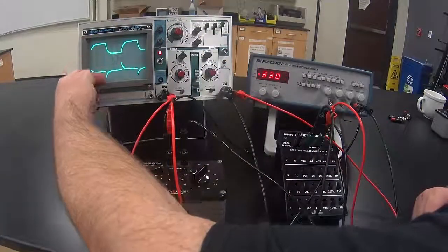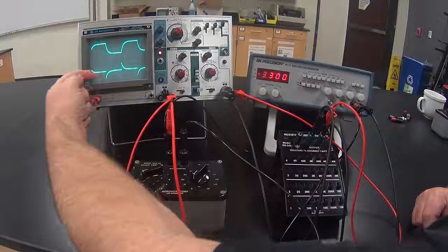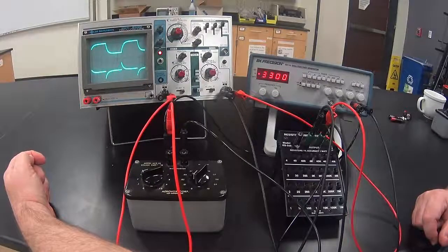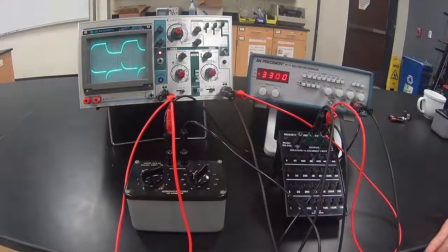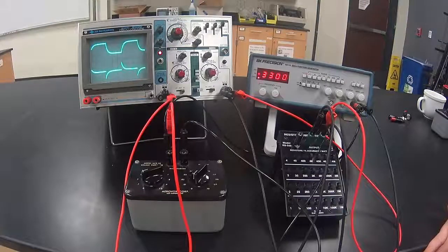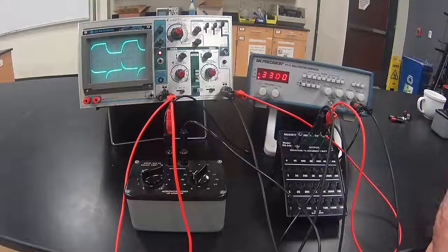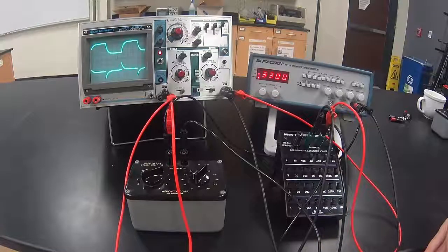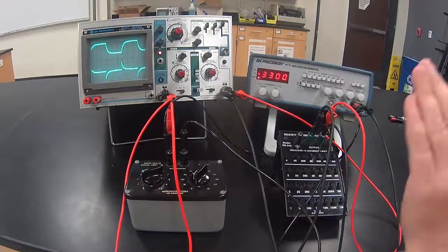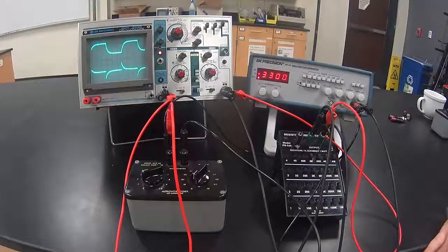Notice that when the capacitor starts to discharge, there's a large negative voltage on the resistor. And when the capacitor charges, there's a large positive voltage on the resistor. But each time as the capacitor gets charged or discharged, the voltage on the resistor goes to zero. Basically, it's measuring how much current is going through the resistor.